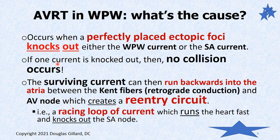AVRT and AVNRT are both caused by a perfectly placed and perfectly timed ectopic foci, which could be in the atria or in the ventricles. PVCs — premature ventricular contractions — follow the same theory as PACs, premature atrial contractions. A perfectly placed ectopic foci knocks out either the Wolf-Parkinson-White current or the SA node current. If one current is knocked out, no collision occurs. Normally, a collision snuffs the two currents out, so the surviving current is able to run completely backwards through the Kent fibers of a Wolf-Parkinson-White patient.